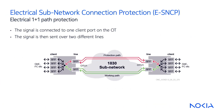A typical optical protection is the electrical sub-network connection protection, or ESNCP, which is implemented electrically. The client signal is connected to one client port on the optical transponder, or OT, and transmitted in both line directions — working and protecting.